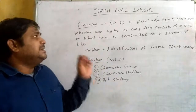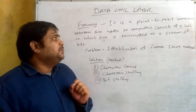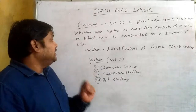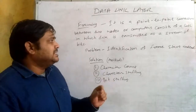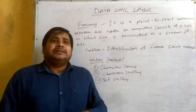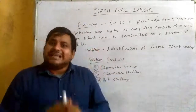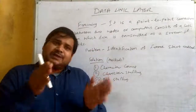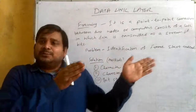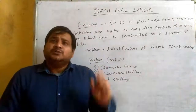Framing is a point-to-point connection between two nodes or computers, consisting of a link in which data is transmitted as a stream of bits. The bits of the nodes are transmitted as a stream of bits.